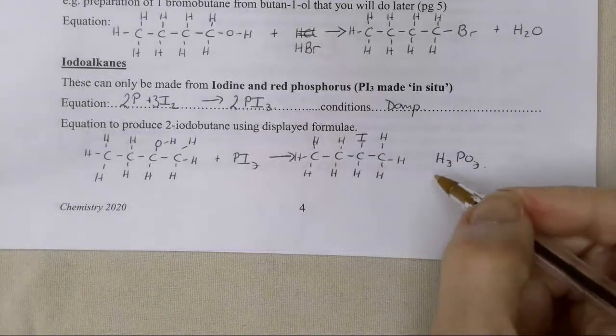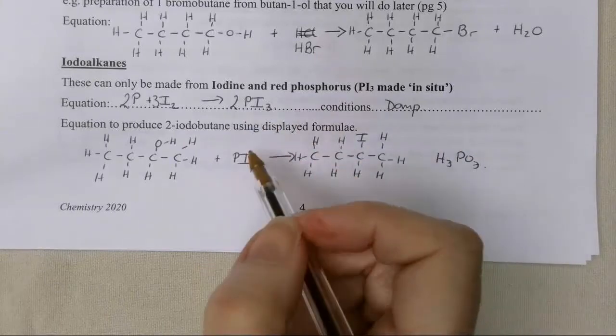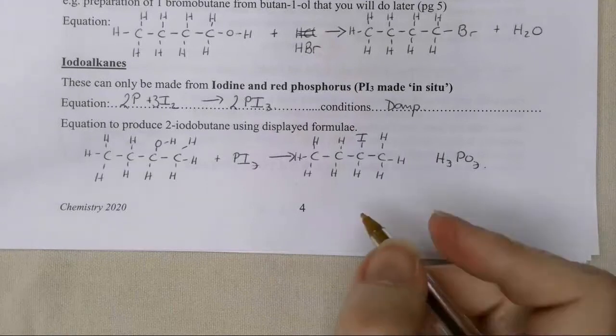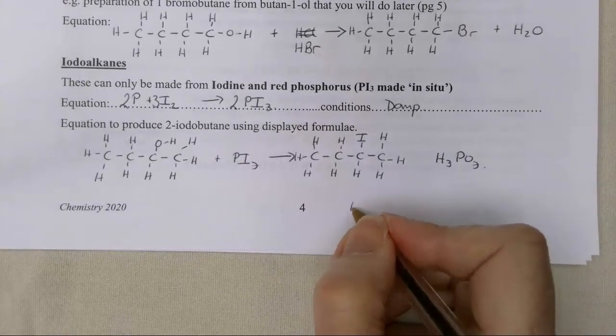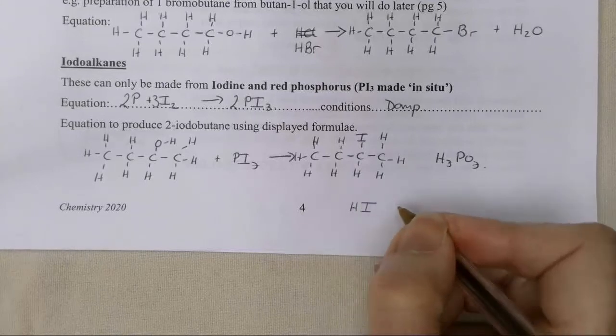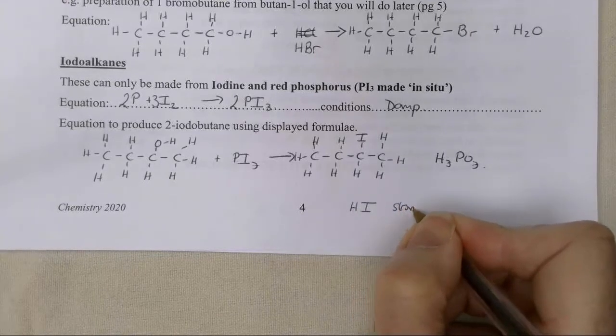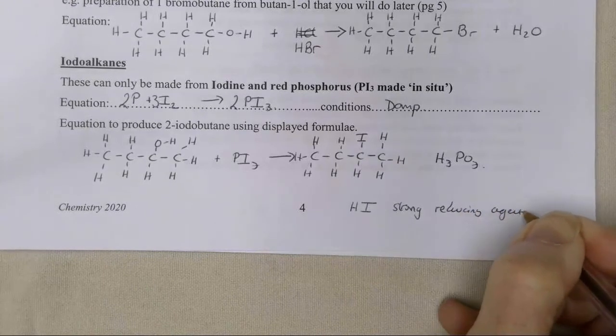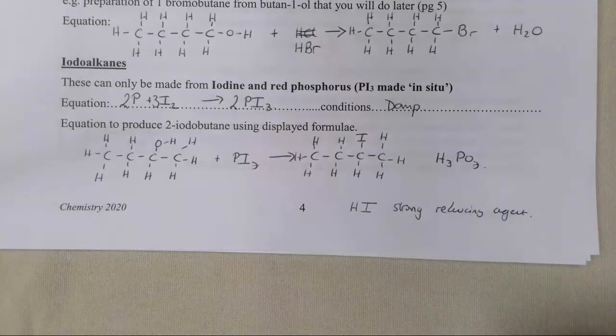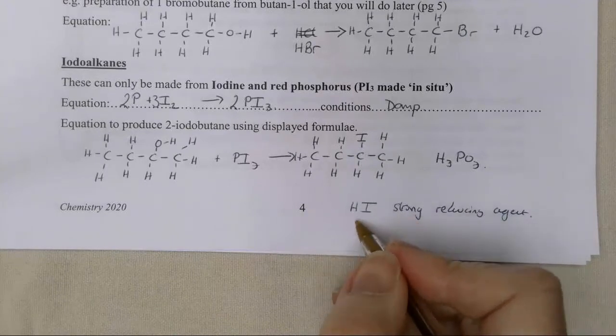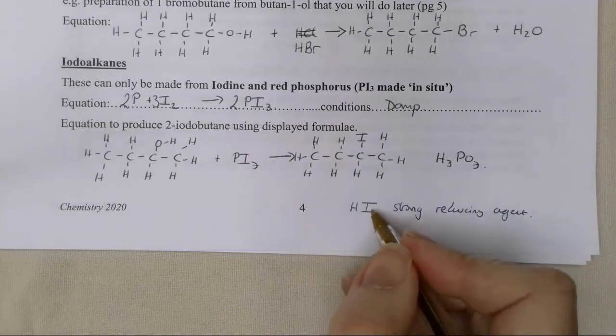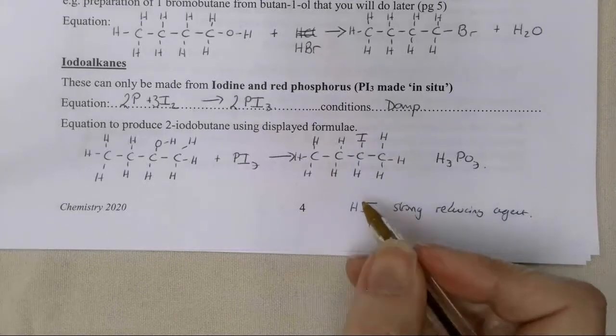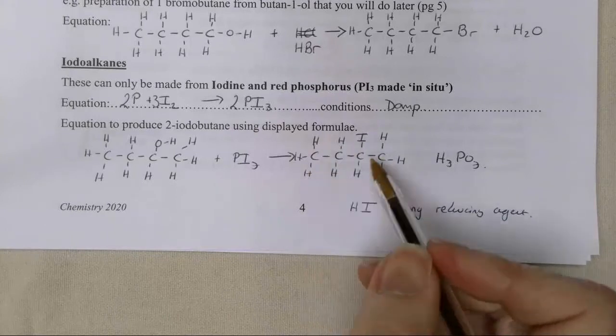One thing you need to be aware of is why we can't use HI in this reaction. It goes back to something we had in our halogen pack. If you remember, hydrogen iodide is quite a strong reducing agent. If it was mixed with some sulfuric acid, it would preferentially reduce the sulfuric acid, the sulfur in the sulfuric acid, rather than reacting with the alcohol. That's why we can't use HI in this mechanism.